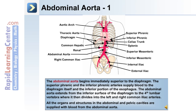The abdominal aorta begins immediately superior to the diaphragm. The superior phrenic and inferior phrenic arteries supply blood to the diaphragm itself and the inferior portion of the esophagus. The abdominal aorta extends from the inferior surface of the diaphragm to the fourth lumbar vertebra, where it then divides into the left and right common iliac arteries.